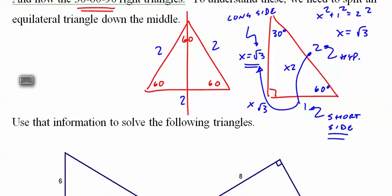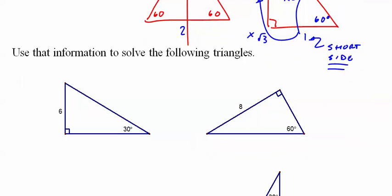So, for example, short side is here, long side is here, hypotenuse is here. Double it, 12, multiply by root 3, 6 root 3.